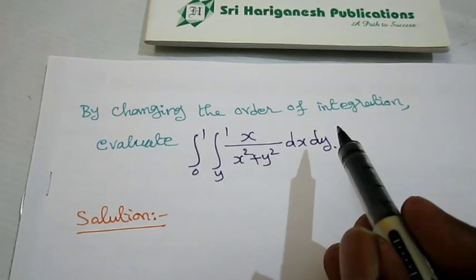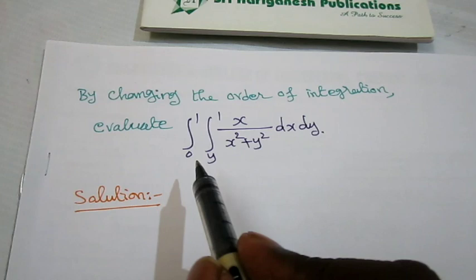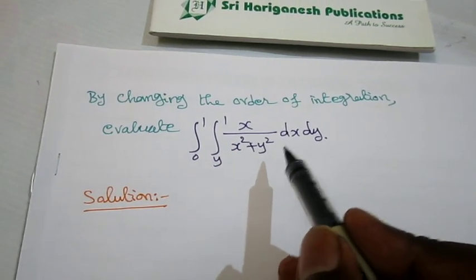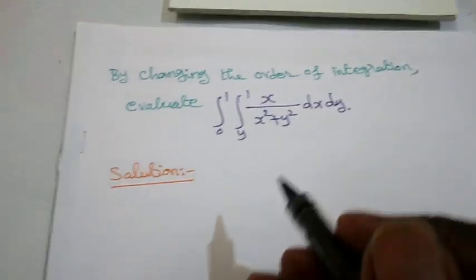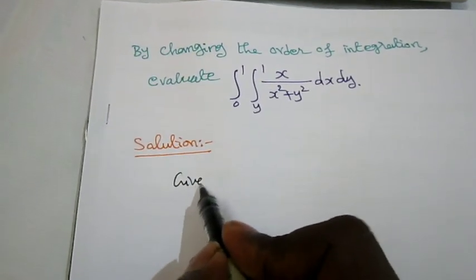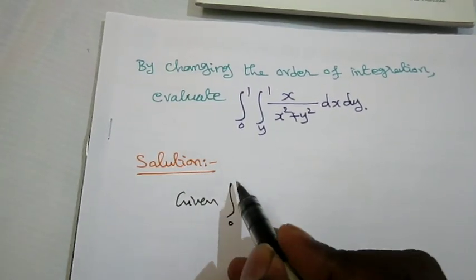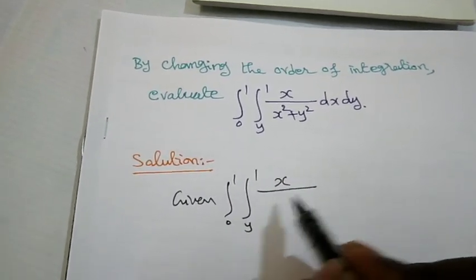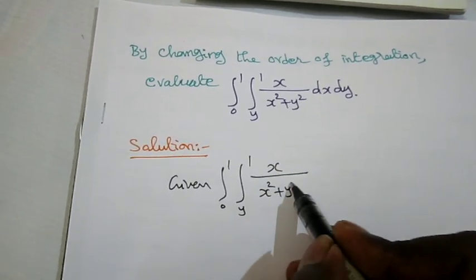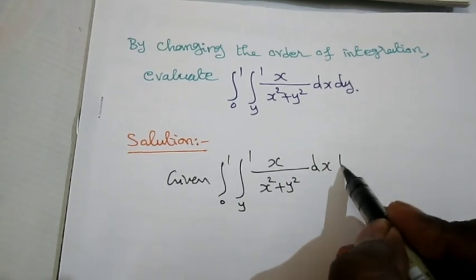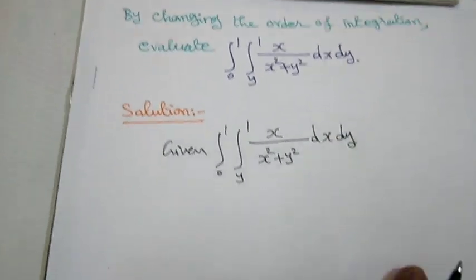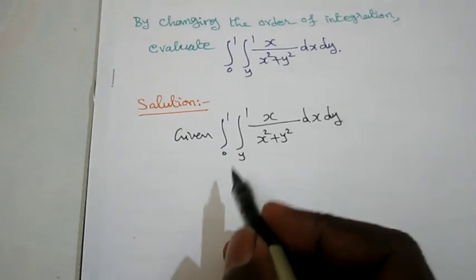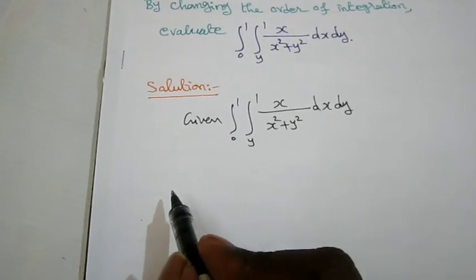By changing the order of integration, evaluate the integral from 0 to 1, integral y to 1, of x divided by (x squared plus y squared) dx dy. So the given integral is the integral from 0 to 1, integral y to 1, of x divided by (x squared plus y squared) dx dy. From this given integral, I am going to write out the given limits.